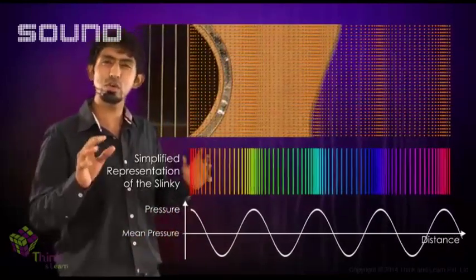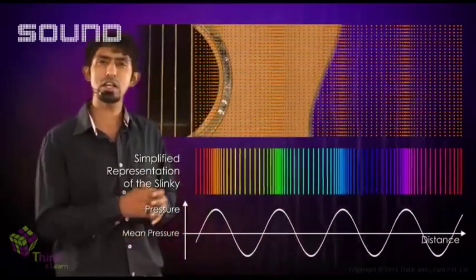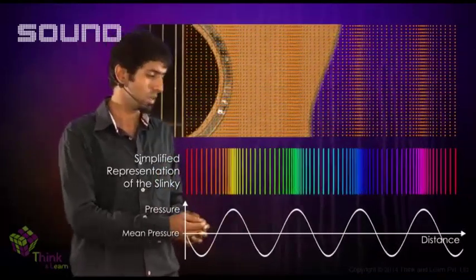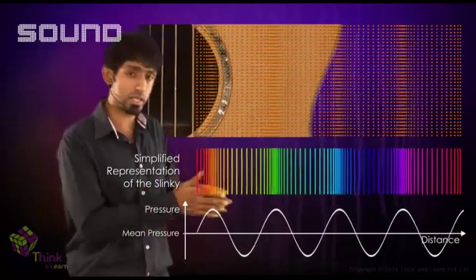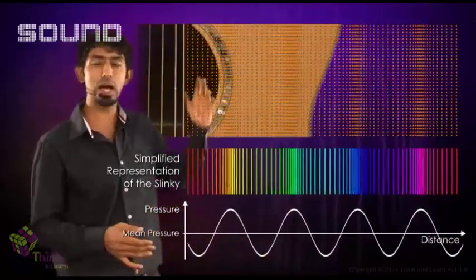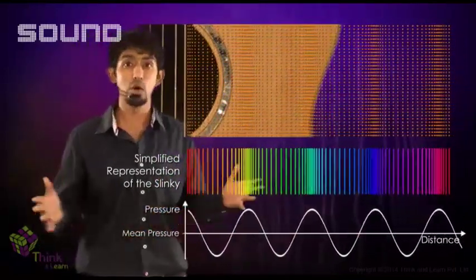So longitudinal waves are usually a little difficult to visualize. Therefore, the graph actually gives you more of a transverse representation of it. Because if you had taken a string and done that, the graph is how it would have looked. But in this case, that represents the sound and the slinky, both of which are longitudinal waves.